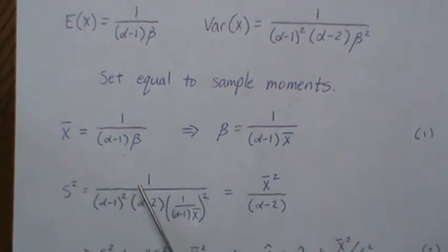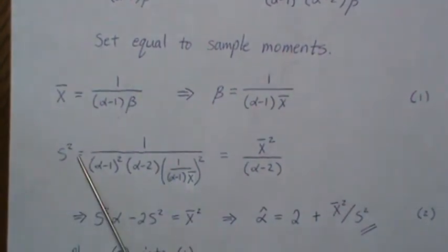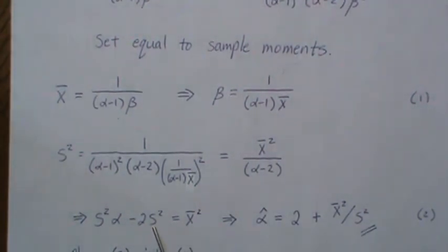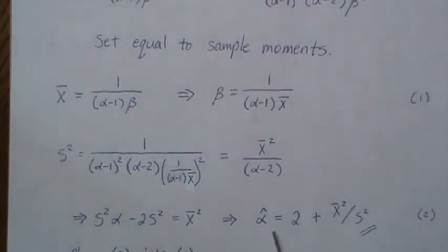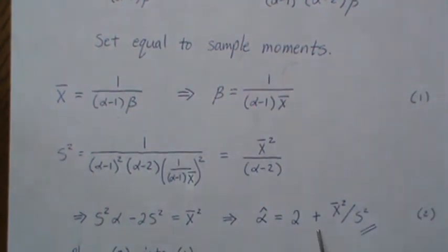When you solve, multiply this up and we get this equals the mean squared. Add this to the other side, divide by the sample variance, and we get α̂ = 2 + x̄²/s².